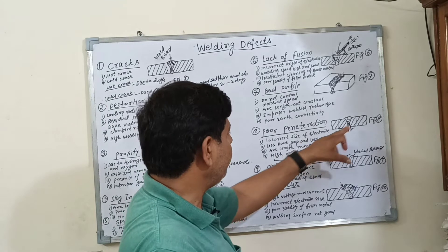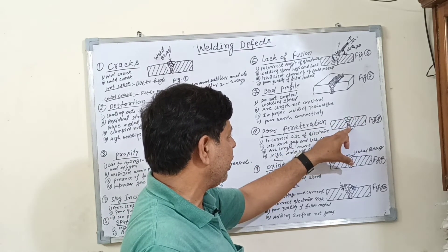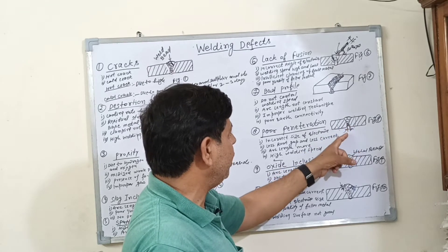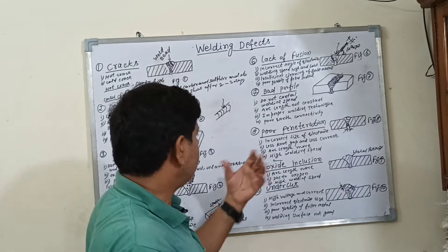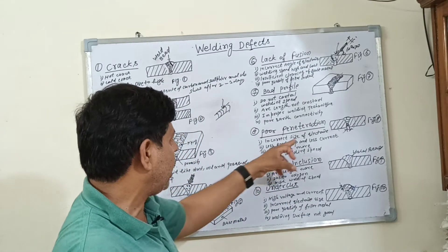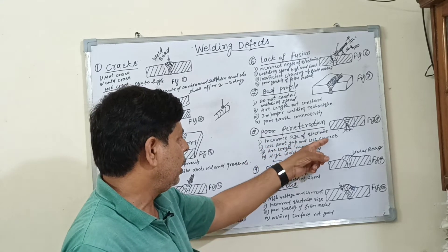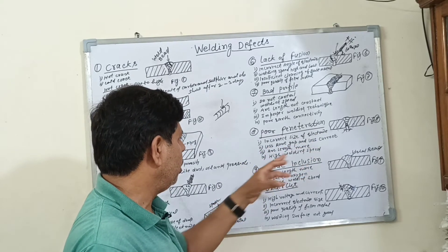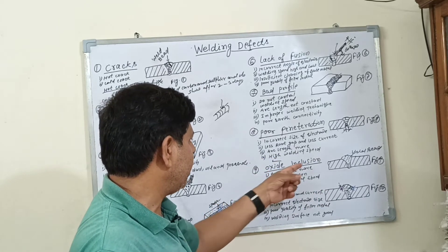Number eight is poor penetration. Poor penetration means the molten metal is not properly filling the cavity. The gap should be equal to the diameter of the electrode. The reasons behind it include incorrect size of electrode, less root gap and less current, arc length being too large, and high welding speed.